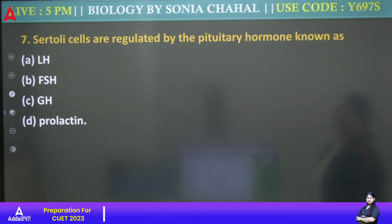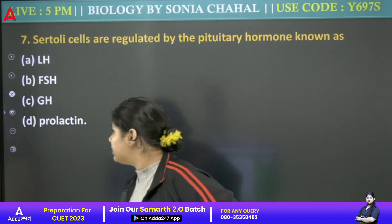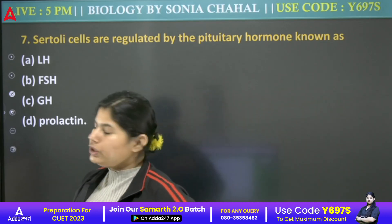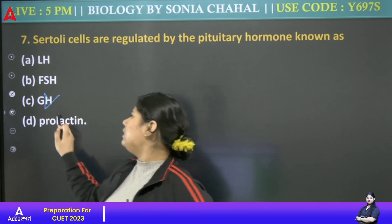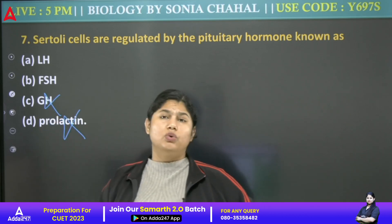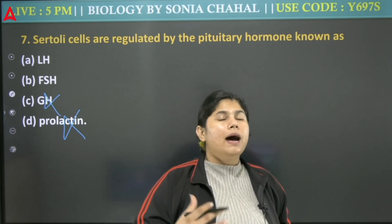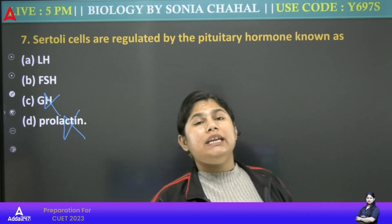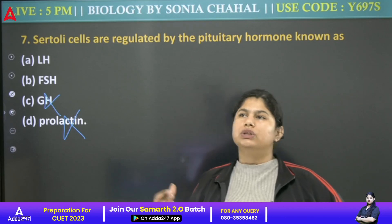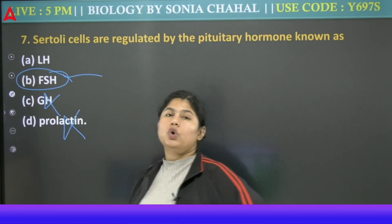Next: Sertoli cells are regulated by the pituitary hormone known as — LH, FSH, GH, or prolactin? GH means growth hormone, prolactin — that does not happen here. Let's talk about Sertoli cells. Luteinizing hormone is LH, and Follicle Stimulating Hormone is FSH. Our Sertoli cell is controlled by FSH.